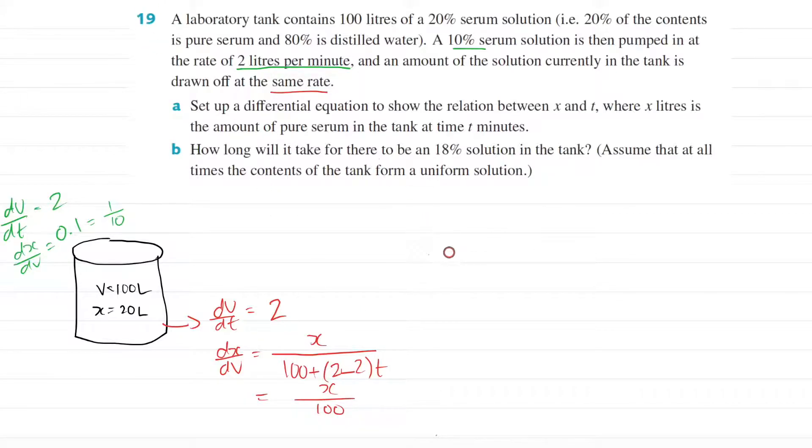Once you've got your diagram, then you can easily do part A, which is set up your differential equation right here. So they just want you to know, they want you to find out what the dx/dt is, the rate of flow of the serum, the pure serum into the tank. So the dx/dt is volume times concentration minus volume outflow times concentration outflow. And you should get 2 over 10 minus 2x over 100.